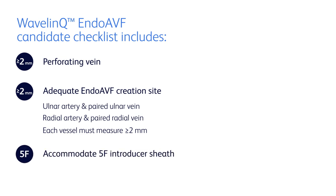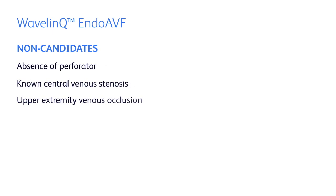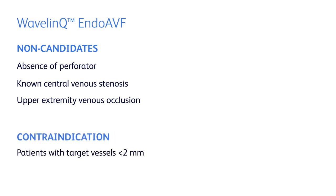Finally, the vein and artery used for access need to accommodate a 5 French introducer sheath, which is approximately 2 millimeters in diameter. Not all patients will be candidates for the Wavelink Endo-AVF System procedure. Those who do not have a perforating vein, or have known central venous stenosis or upper extremity venous occlusion on the same side as the planned AVF creation, are not candidates. Also, the procedure is contraindicated for patients with Endo-AVF target vessels less than 2 millimeters in diameter.